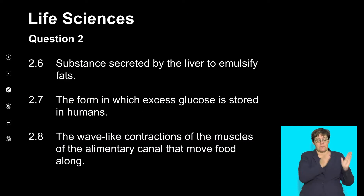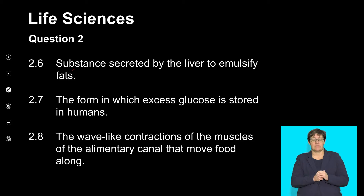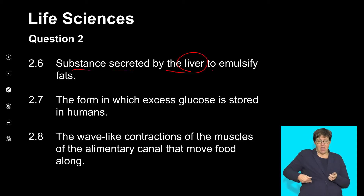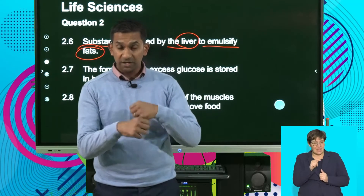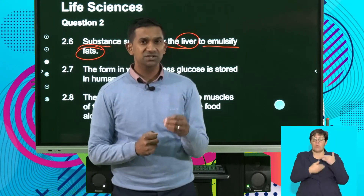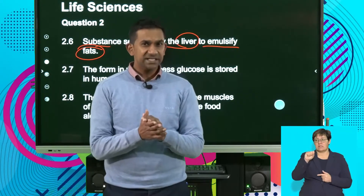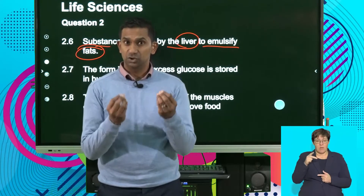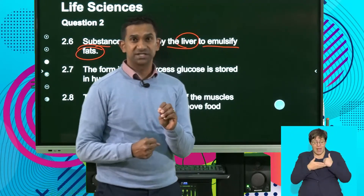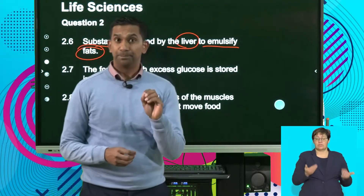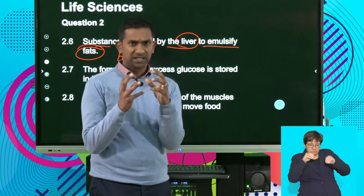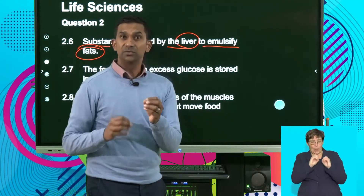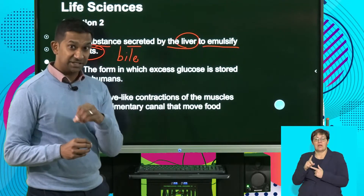2.6: Substances secreted by the liver to emulsify fats. Remember that fats are first broken down mechanically by a process called emulsification, which is essentially breaking down the fats into smaller droplets. To assist that process, the liver produces bile — the bile salt that is released helps to break down the larger fat molecules into smaller molecules, which then undergo enzymatic digestion.